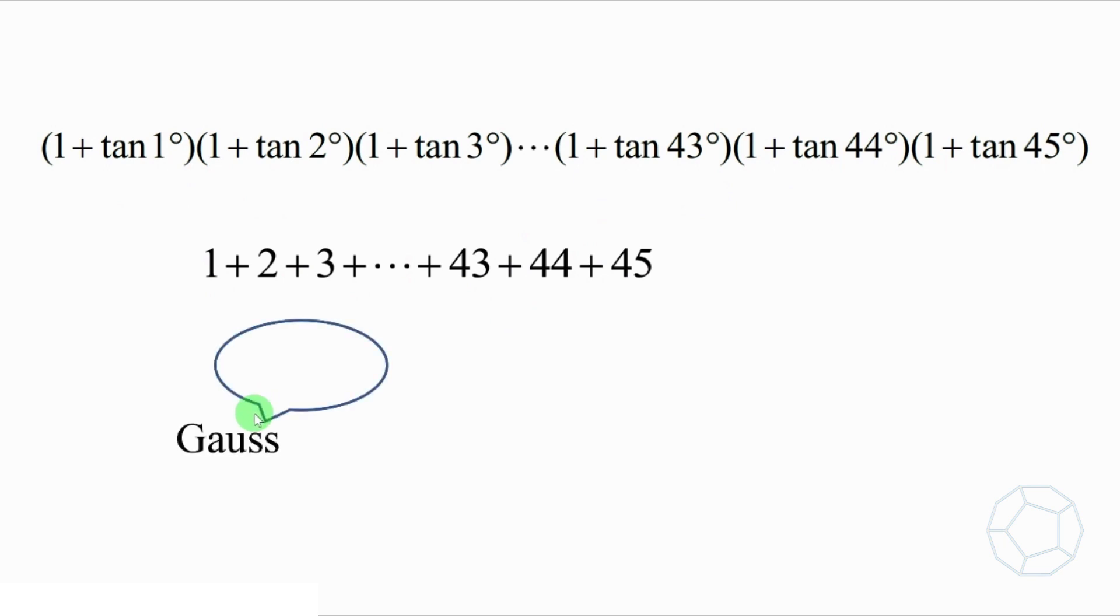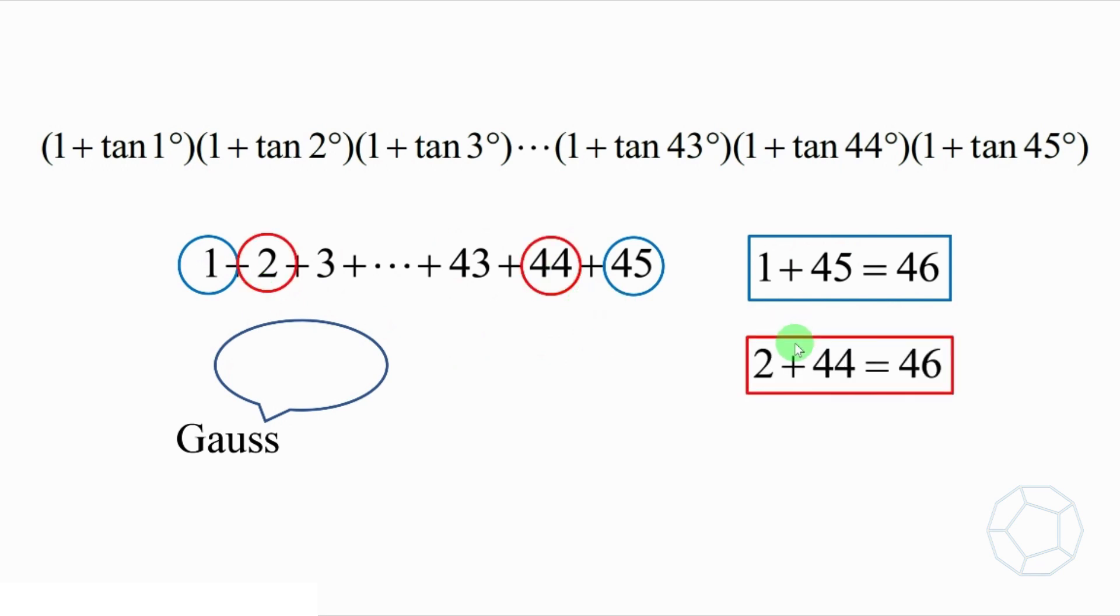The great mathematician Gauss has taught us how to find this sum easily when he's just 8 years old. That is, to add 1 and 45 to get 46, adding 2 and 44 to get another 46, so on and so forth. That means to pair up the terms in the front and at the back.